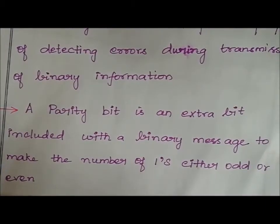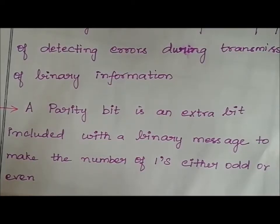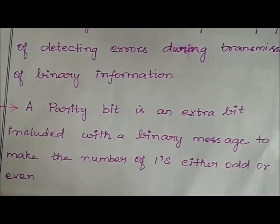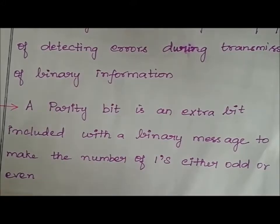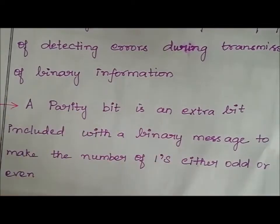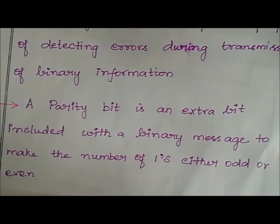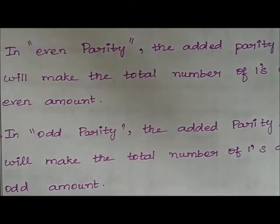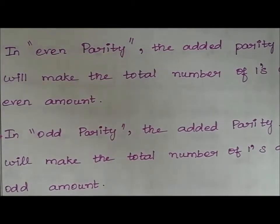Parity bit is an extra bit included with a binary message to make the total number of ones either odd or even. There are two types: even parity bit and odd parity bit. Even parity makes the total number of ones even; odd parity makes the total number of ones odd.